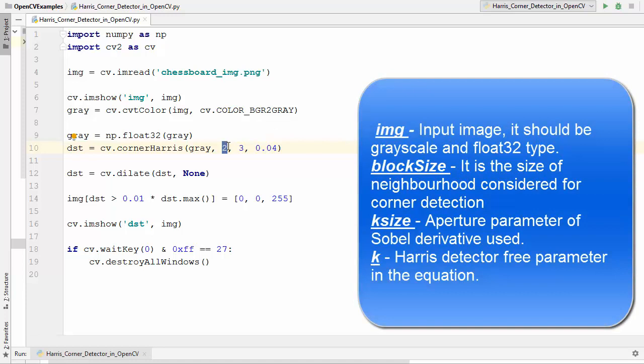For example, we define this block size 2 - that means neighborhood size is equal to 2. That means for each pixel value, block size multiplied by block size, that is 2x2 neighborhood is considered. The next parameter here is called k size, which is the aperture parameter for the Sobel operation. Then we have the next parameter which is called k, the Harris detector free parameter in the equation.